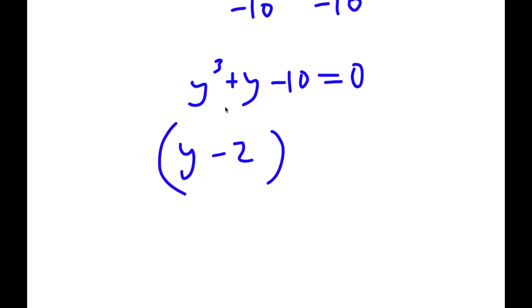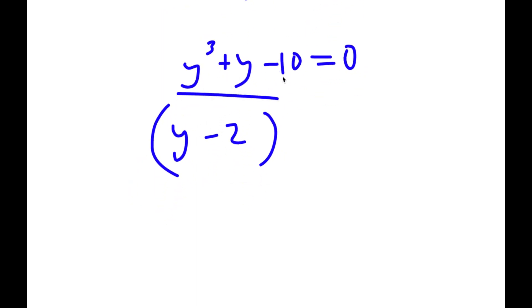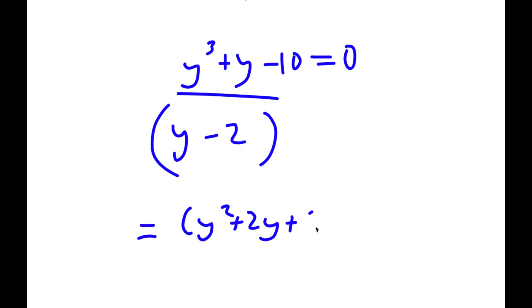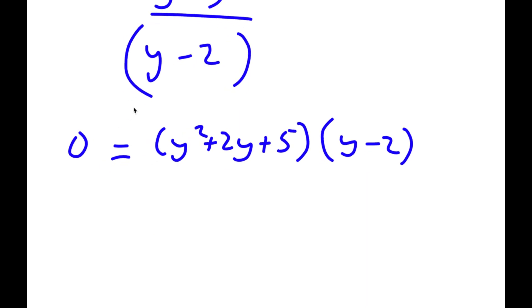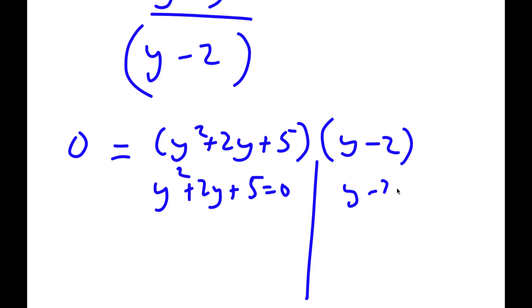So now I divide y cubed plus y minus 10 by y minus 2. Using long division or synthetic division, I get y squared plus 2y plus 5 times y minus 2. So y cubed plus y minus 10 equals y squared plus 2y plus 5 times y minus 2, and this equals 0. This gives me two equations: y squared plus 2y plus 5 equals 0, and y minus 2 equals 0.